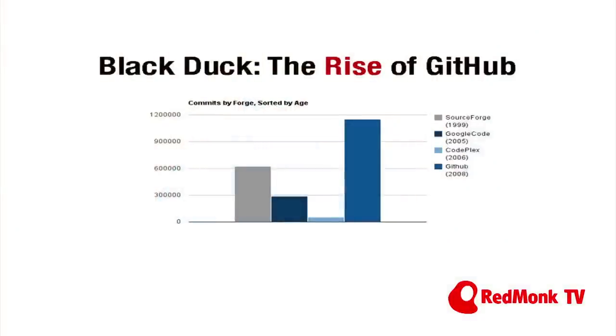They come to us regularly and say, 'Hey, we have this data—anything interesting in here?' This slide is about the rise of GitHub. All I've done is take the commit volume—I think this is commits for the first half of 2011, two quarters of data—total commits across four forges, ranked by age to point out that GitHub's popularity, its overwhelming popularity, is really truly a phenomenon worth understanding and targeting and adjusting to.